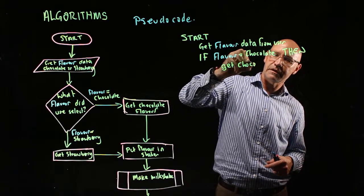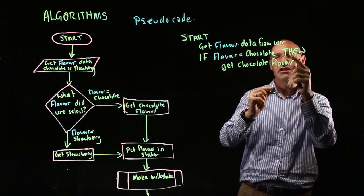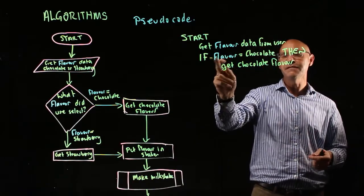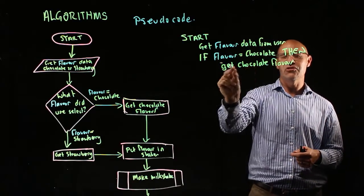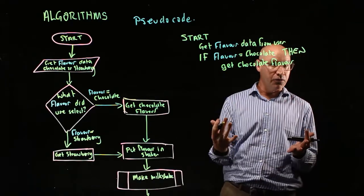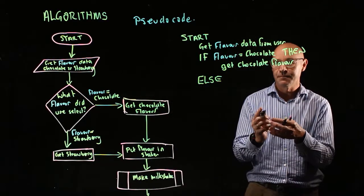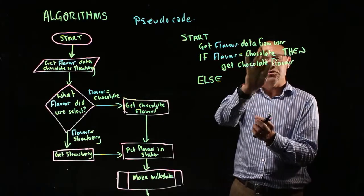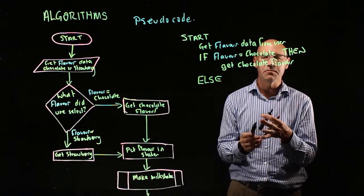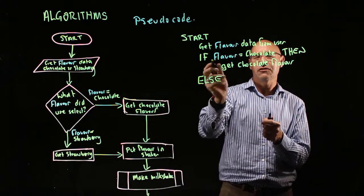Now if it's not that, then we say else. So if this then that, else that means the alternative. So what's the alternative here? If it's not chocolate, then it's going to be strawberry. So if it's not chocolate, else get strawberry flavor.